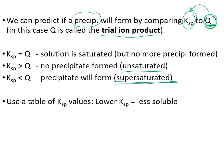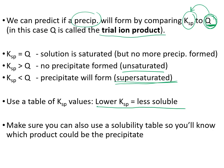If the question doesn't give you the Ksp value, look it up on a table and compare it to your Q. Remember: the lower the Ksp, the less soluble the substance. Also, if you're forming two products, identify which is least soluble — that's the one to calculate Q for, since it will precipitate first. If there are two products, solve for Q using the least soluble product.